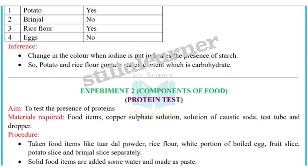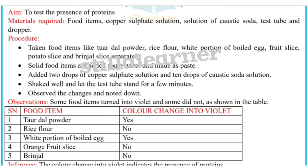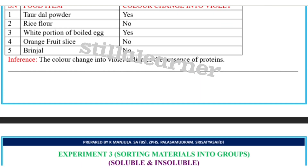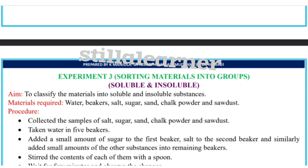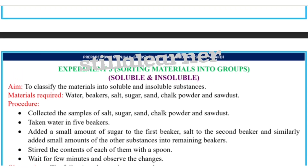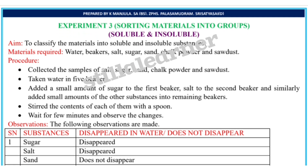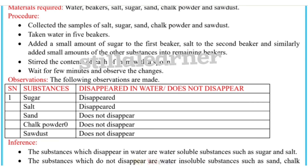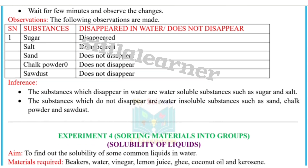Experiment 2 is components of food — the protein test. Experiment 3 is sorting materials into groups: soluble and insoluble. For each experiment you have to write: first the aim, then materials required, then procedure, then observation, and finally the inference.